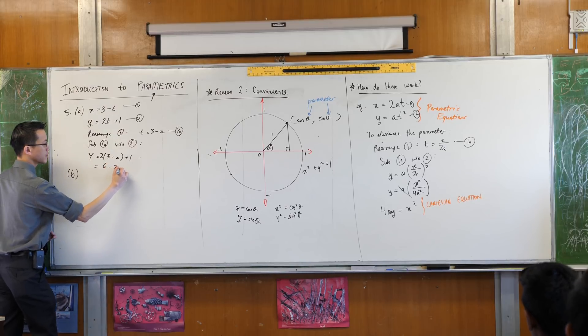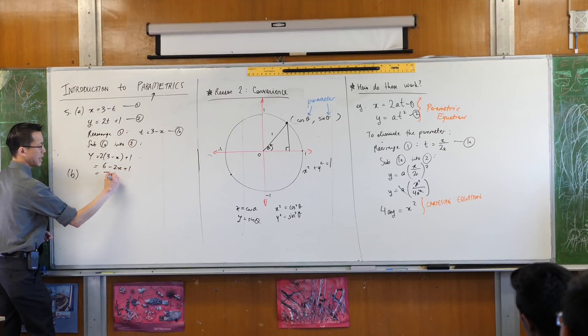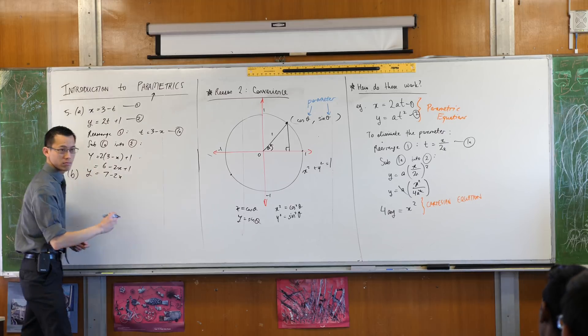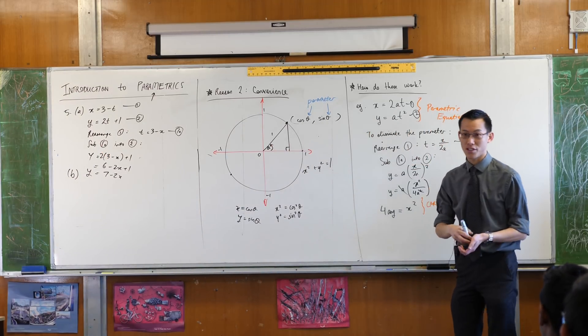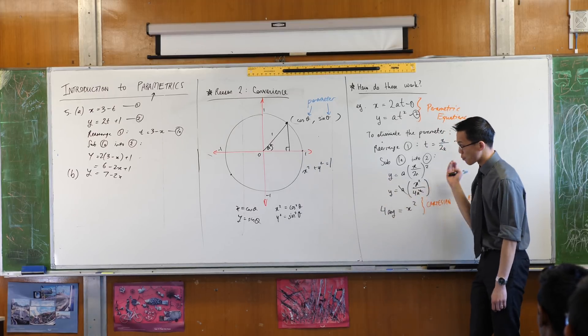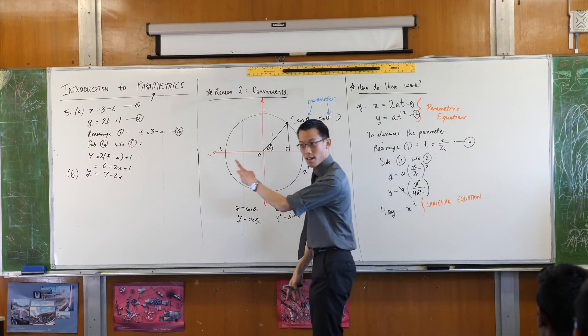So when you have a look at this, how's that look? Happy with that? You can see that parametric equations, depending on how you write them, can give you a circle, can give you a parabola, can give you a straight line.